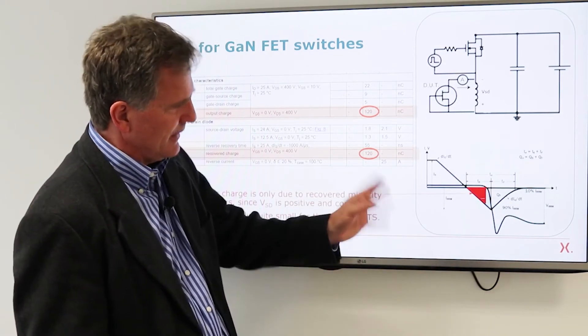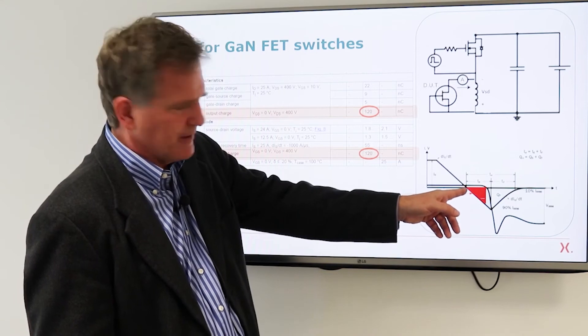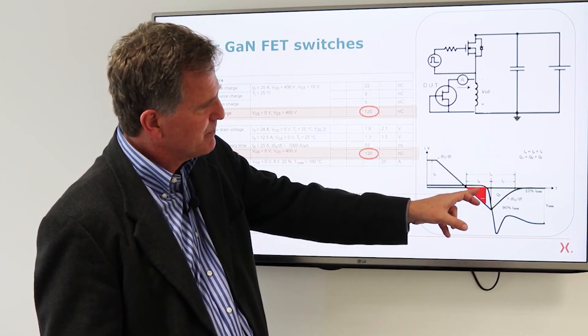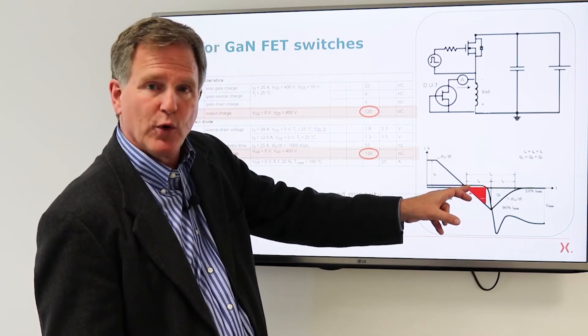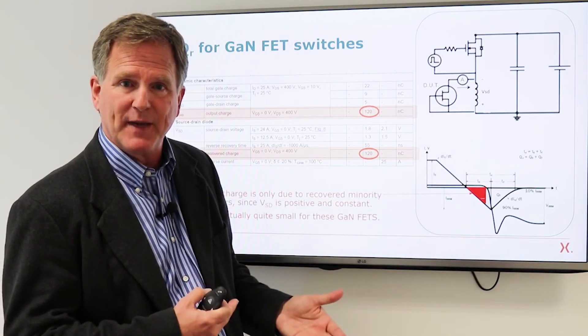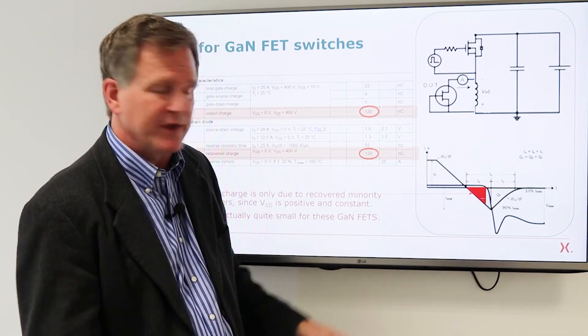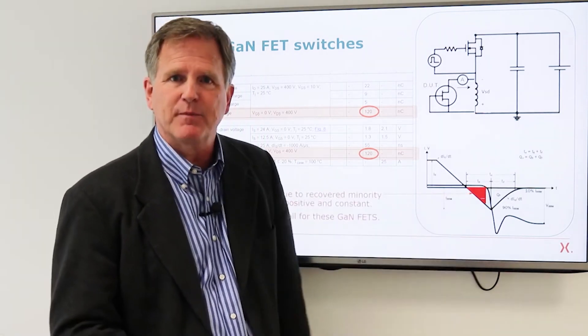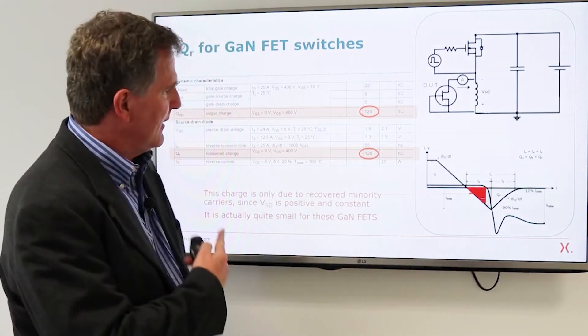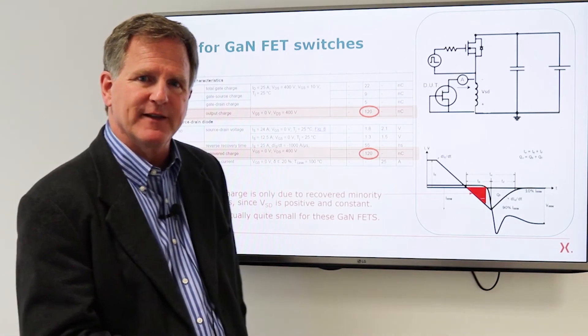And just as an additional point if there were minority carrier charge it would be this part of the curve where the voltage is still positive and constant meaning we're not charging any capacitance we're simply removing minority carriers but like I said that is actually a very small part of the total charge recovered for our GAN FETs.